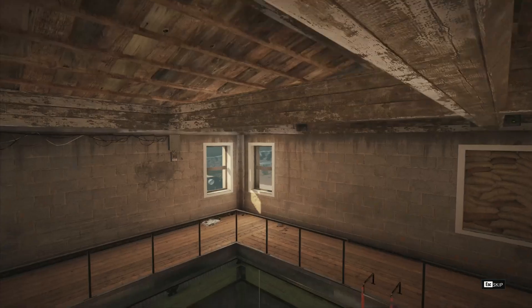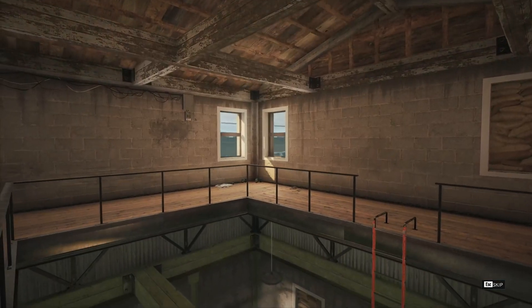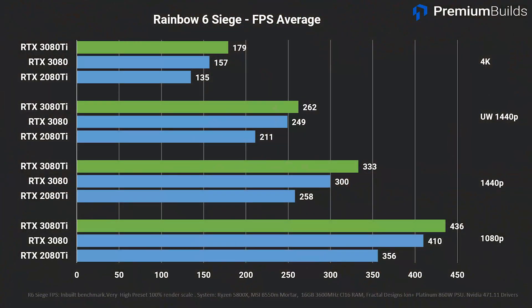Rainbow Six Siege is much faster running across the board and again retesting means we omit the RX 6800 XT here. At 1080p, 1440p, 1440p ultrawide and 4K you can see the RTX 3080 Ti posts about a 10% uplift versus the RTX 3080. There's no yawning gap in performance here, just a few more frames.